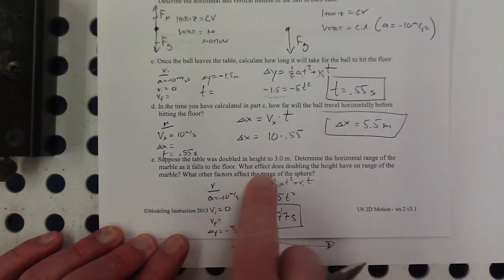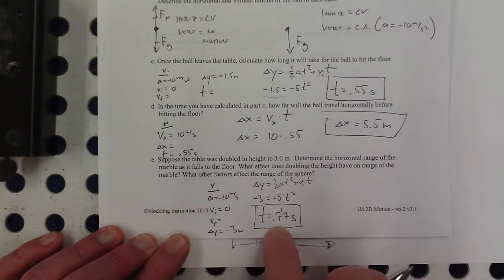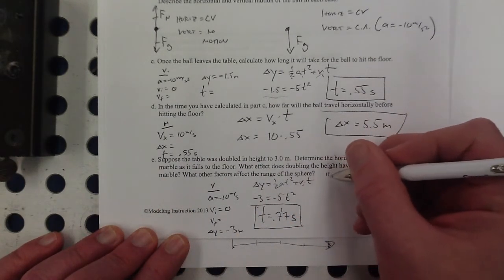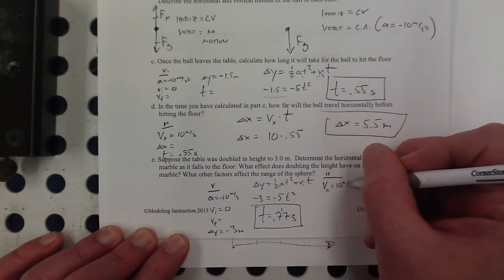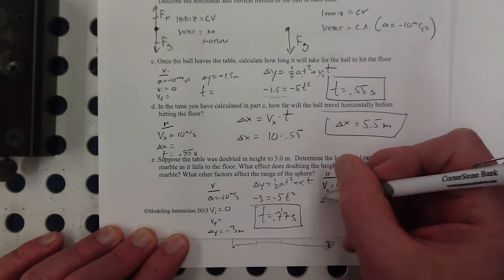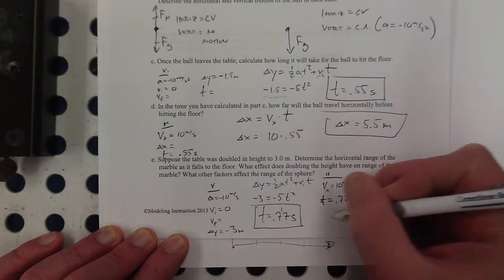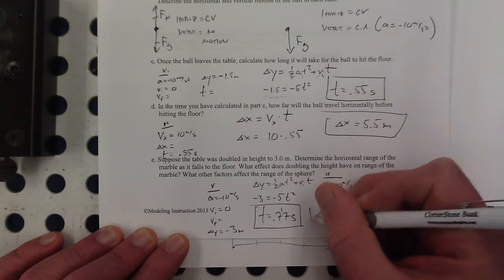And what effect does doubling the height have on the range? Sorry, determine the range. So multiply that by 10 now because in the horizontal direction, I still have my 10 meters per second. And now, I know my time is 0.77. So my delta x is 7.7 meters.